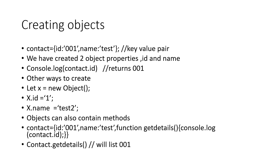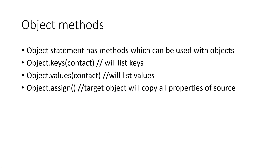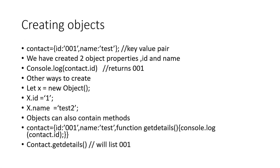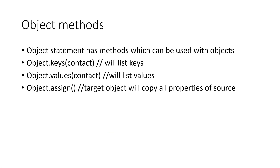An object has an ID, name, value pair, and you can also add a method like getDetails. Before we get into practice, let's see some more about objects. You can list the keys of an object using Object.keys, and also list all the values.